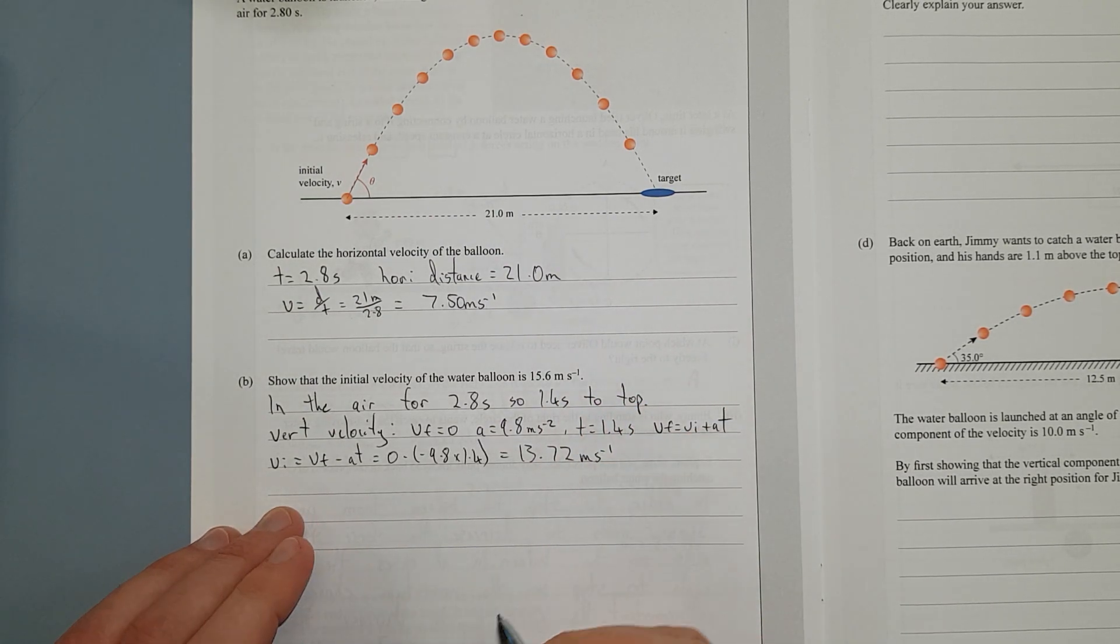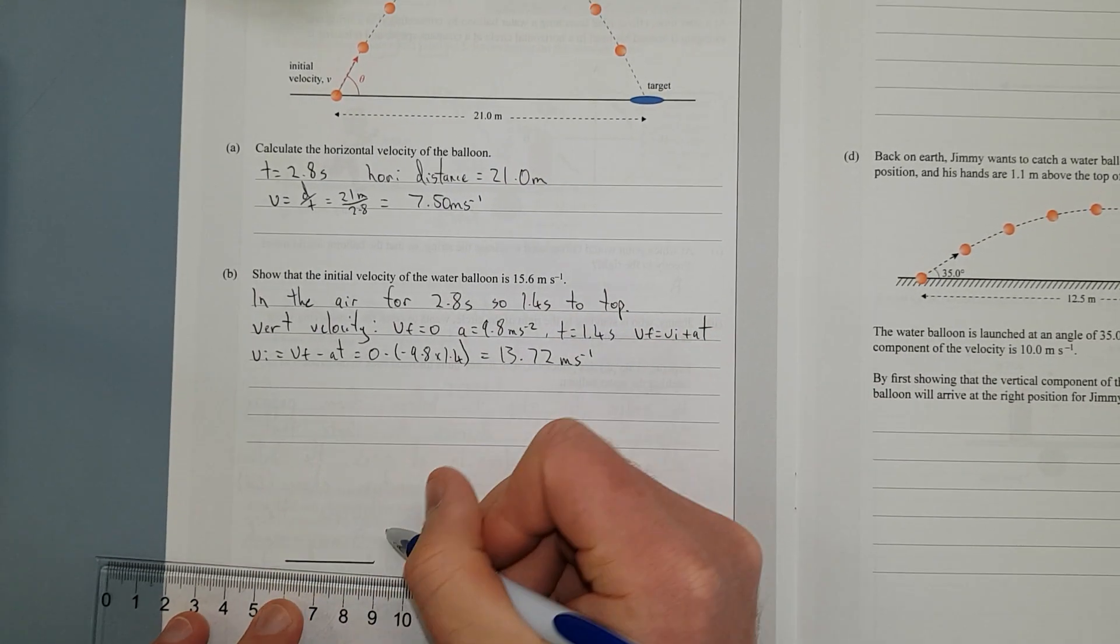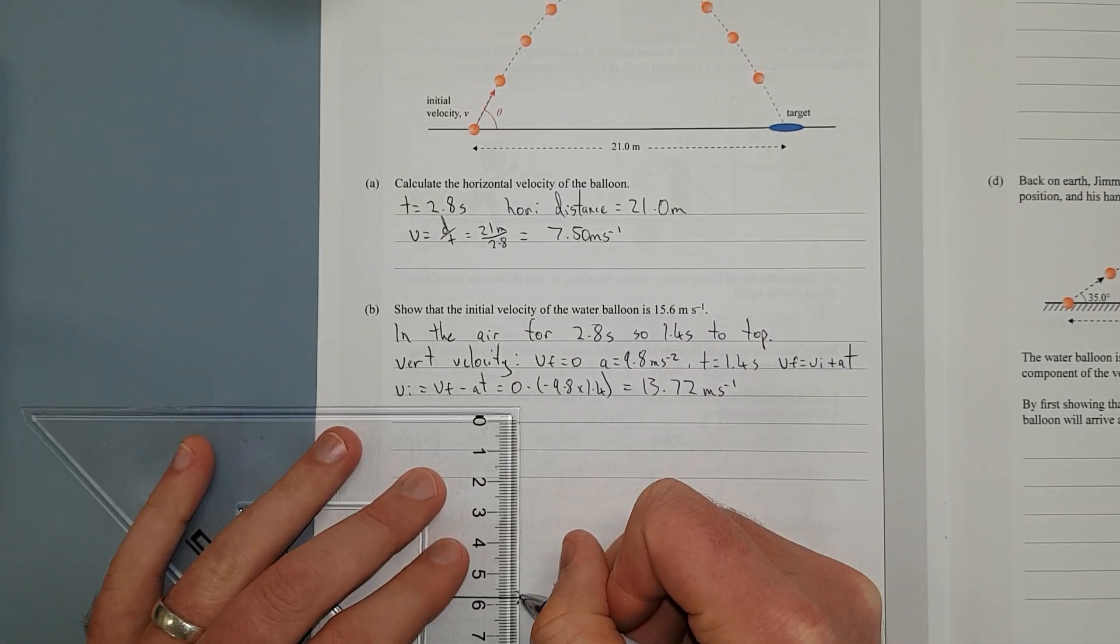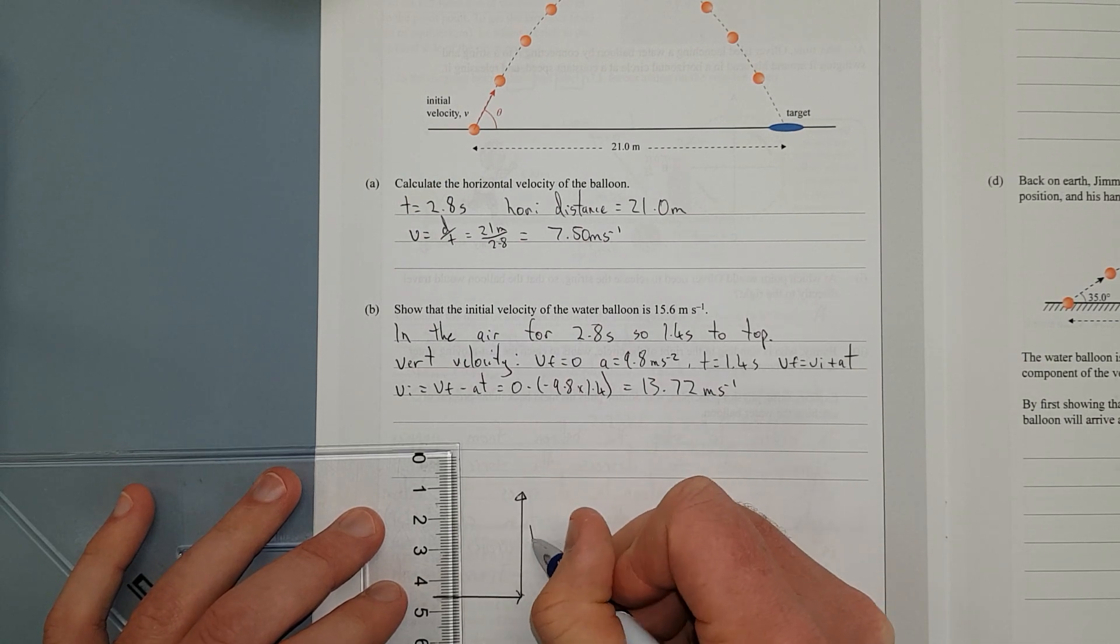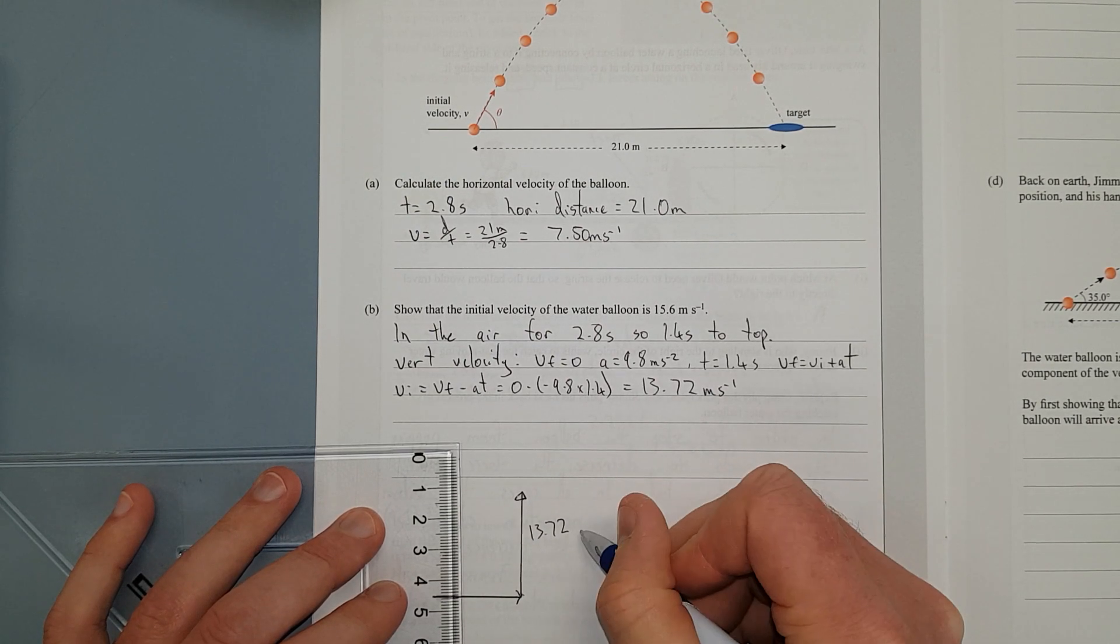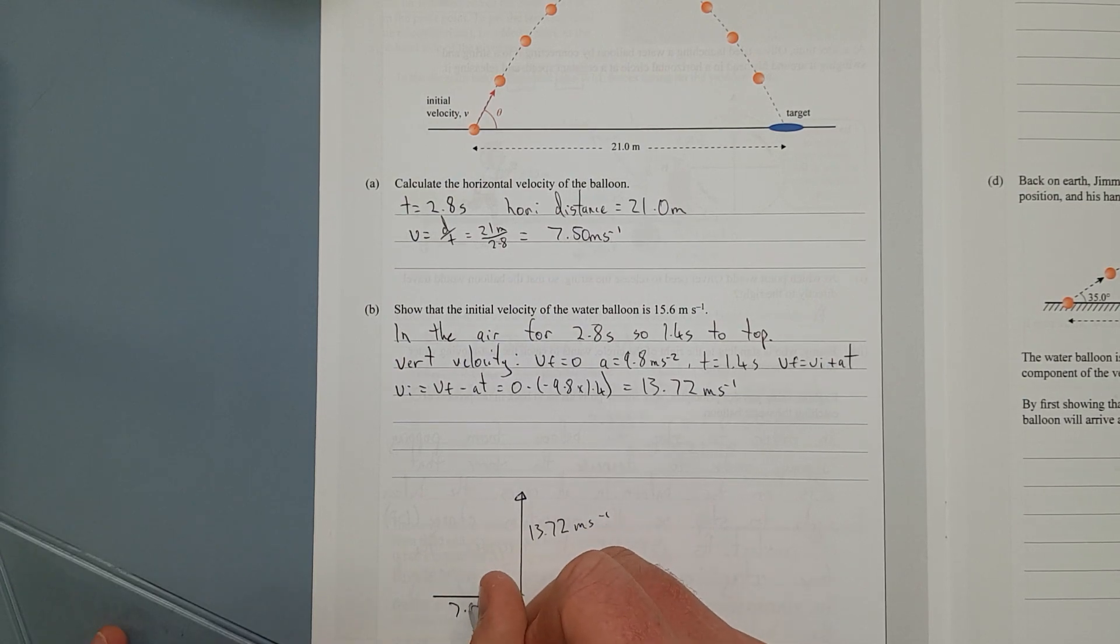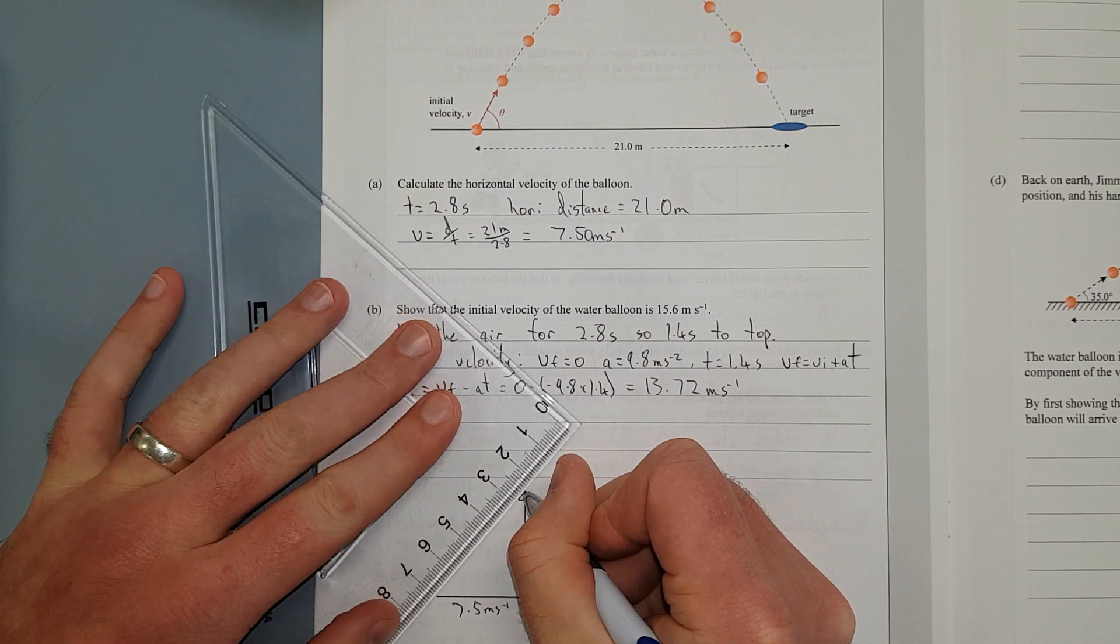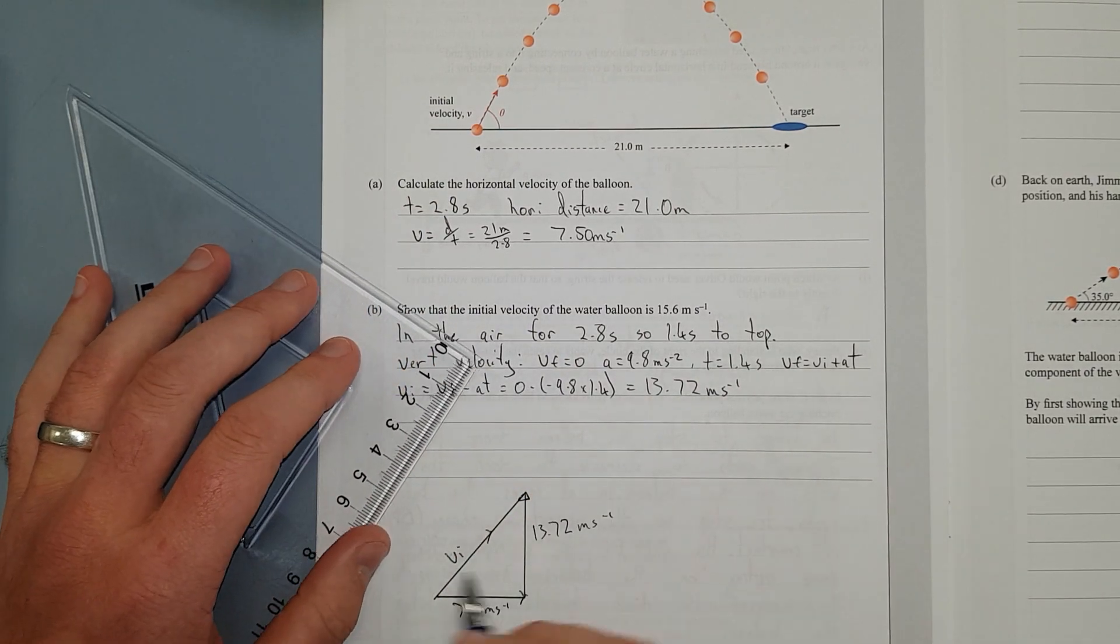So this is where I'm going to draw a little diagram down below with a ruler, just so we can sort of see what's going on. We have, that is the horizontal velocity component. This is going to be the vertical component, which is going to be obviously more, because this is 13.72 metres per second. This is going to be 7.5 metres per second. So our initial velocity, this is VI.